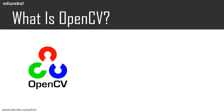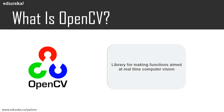OpenCV is a Python library which is used for real-time computer vision. Computer vision is a scientific field that deals with how computers can be made to gain high-level understanding from digital images or videos. OpenCV, also known as Open Source Computer Vision Library, is an open source computer vision and machine learning software library. It was built to provide a common infrastructure for computer vision applications and to accelerate the use of machine perception in commercial products.